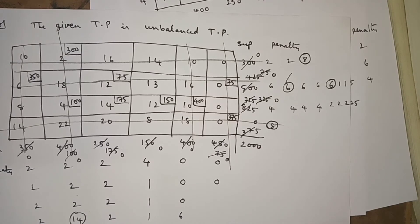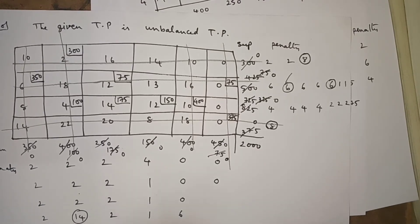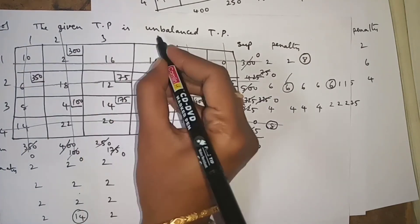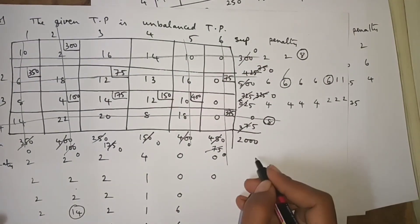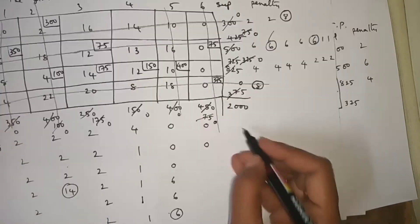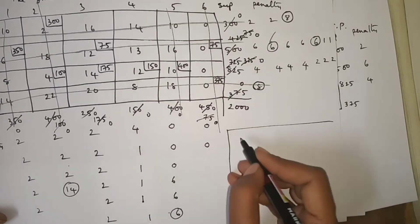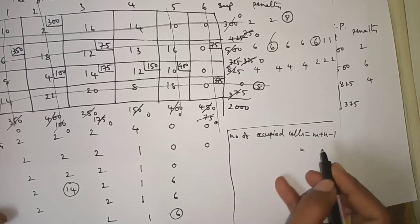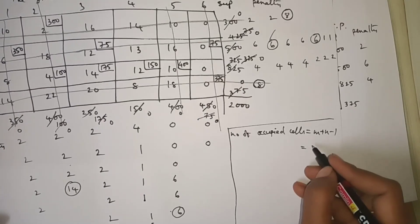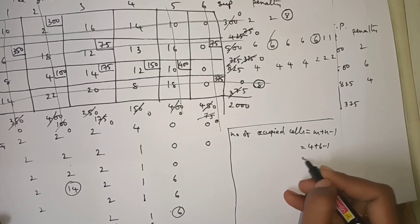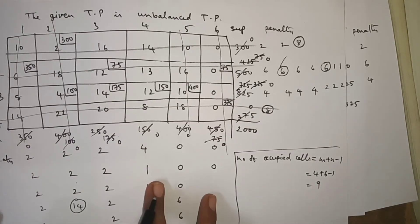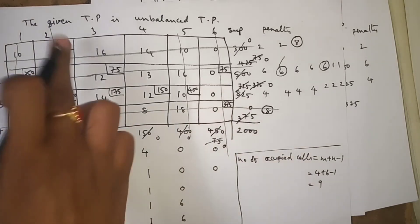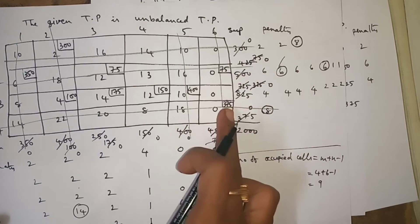Now let's verify: how many occupied cells do we have? Total rows M = 4, total columns N = 6. Number of occupied cells must equal M plus N minus 1 = 4 plus 6 minus 1 = 9. Counting occupied cells: 1, 2, 3, 4, 5, 6, 7, 8, 9. We have got 9 occupied cells — condition satisfied.